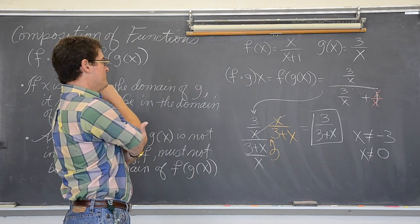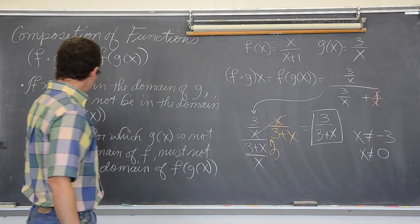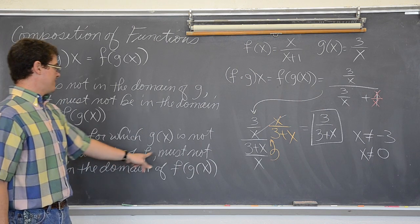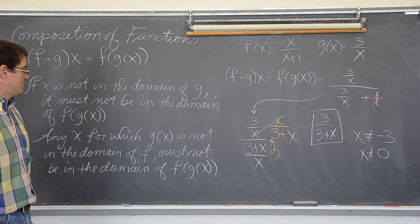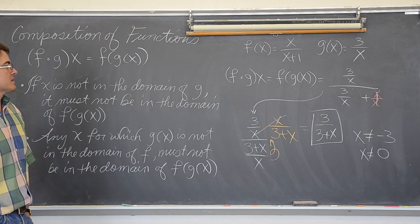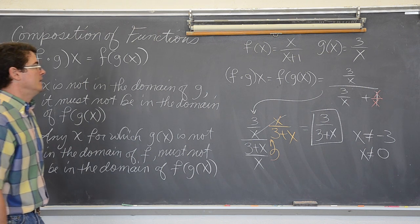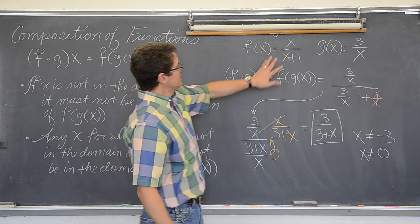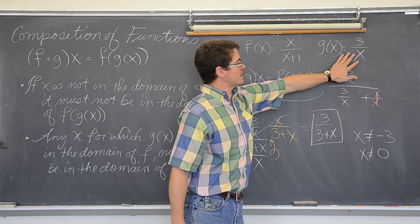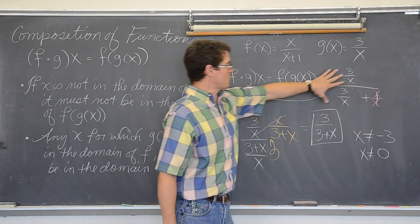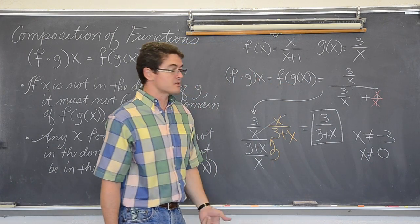And negative 1? Any x for which g of x is not in the domain of f must not be in the domain of f of g of x. So, can x be negative 1? Well, let's see. This becomes undefined, but negative 1 does not make g of x undefined, which is what we are plugging in. And the final equation is not undefined at negative 1. So, that is going to be okay.